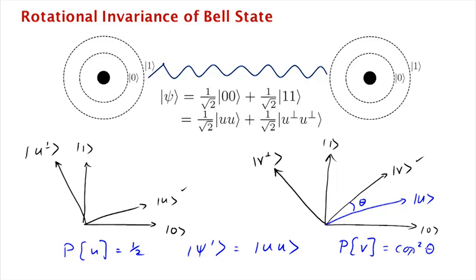The same holds if the outcome of the first measurement was u perp. So in this case, the new state would have been u perp, u perp, meaning that's the state of the second qubit. This angle is also theta.